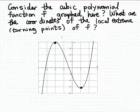So let's try to estimate the coordinates of those points. It appears that the coordinates of this leftmost turning point are approximately minus 4 and 20. So there's one of the local extrema. And it looks like the coordinates of this second point here are about 2 and minus 16.